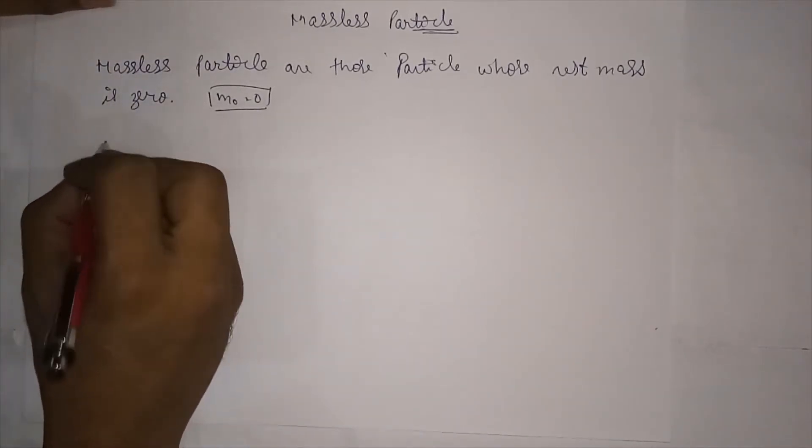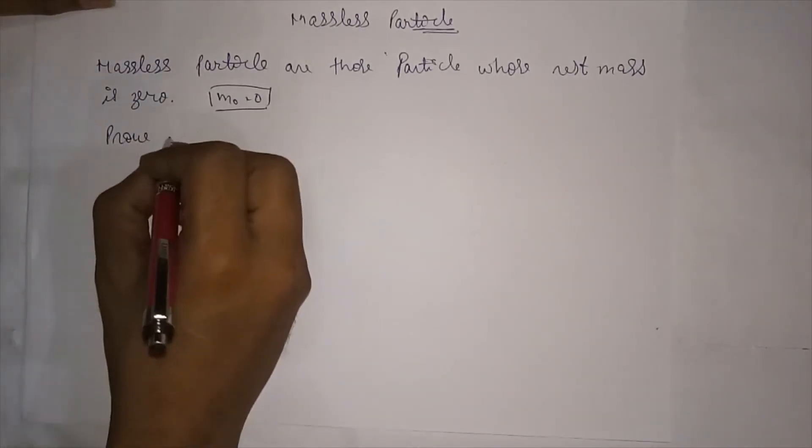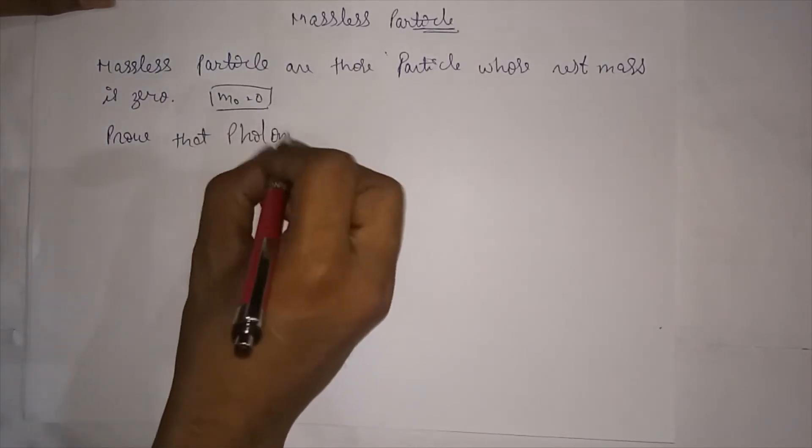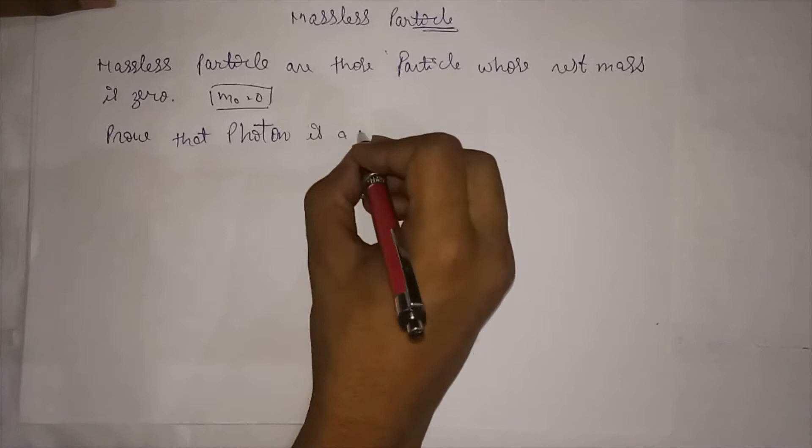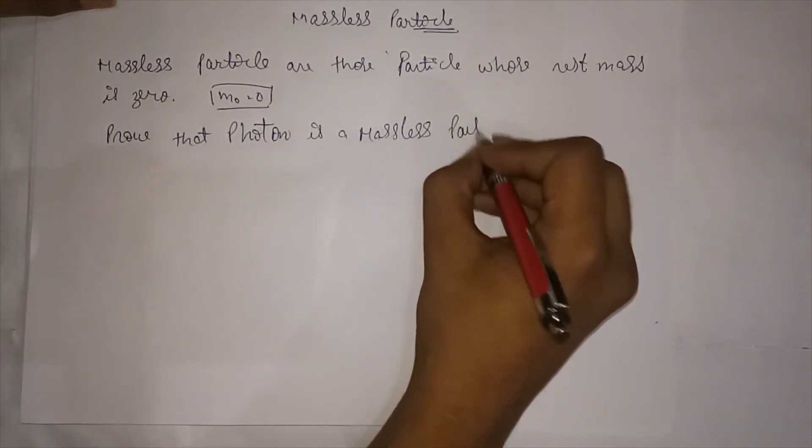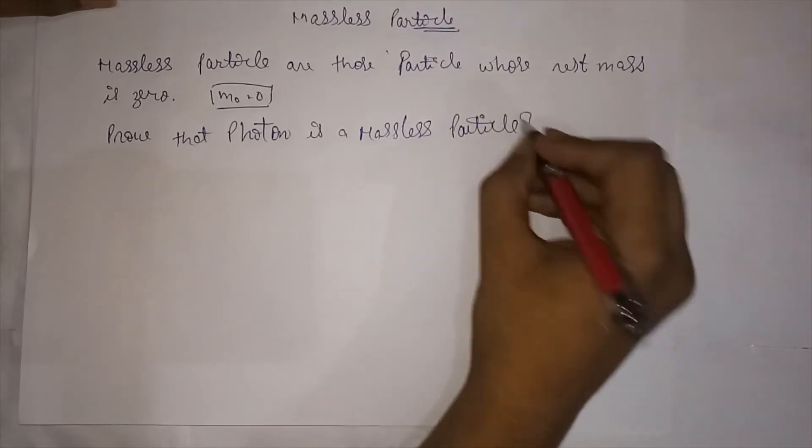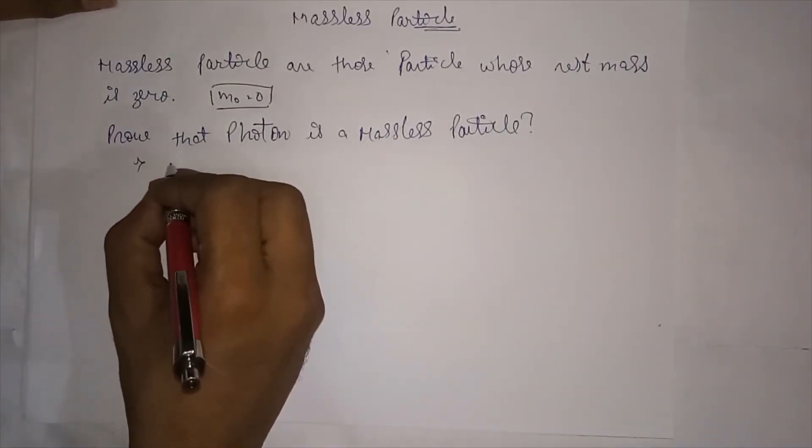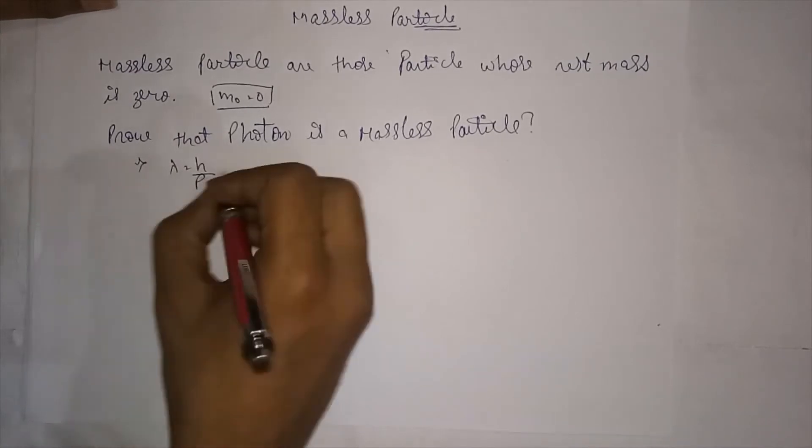Like to prove that photon is a massless particle. For this, we know that lambda is h upon p. This is de Broglie's wavelength equation.